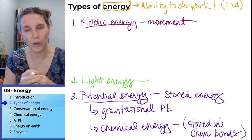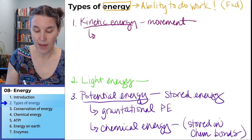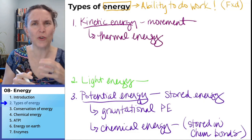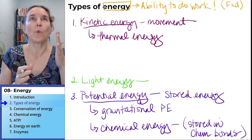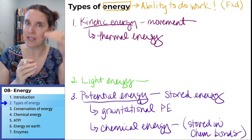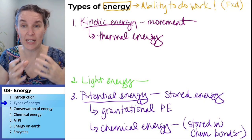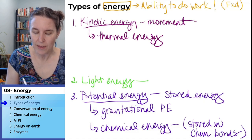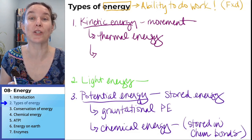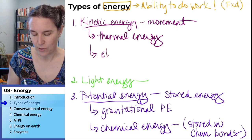This leaves us with a couple types of kinetic energy. One of them we've already discussed: thermal energy. Thermal energy is that energy of movement in molecules — the faster they go, the more thermal energy they have. You can see how it's a category of kinetic energy because it's an energy of movement. The other one I want to talk about briefly, in a biological detail, is electrical energy.